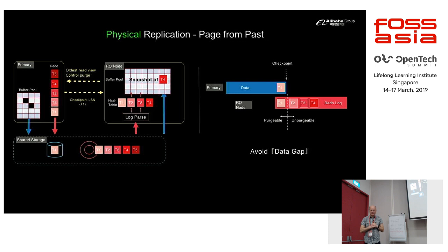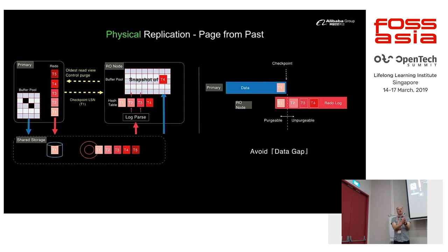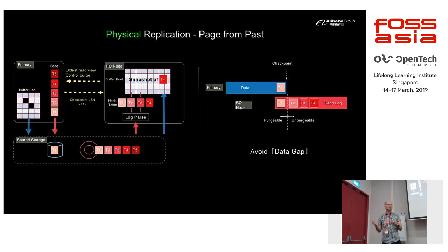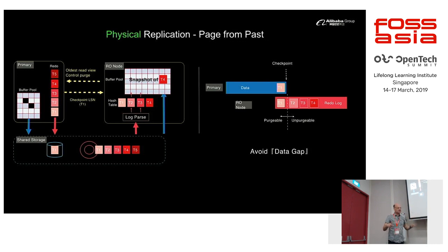InnoDB uses multiversion concurrency control, so there are cases where you need to read an old version of a page using the undo log. In order to do that on a replica, the master must not purge undo log records that a replica might still need. So all replicas tell the master what is the oldest read view they support, so the master does not delete undo log records newer than that. This communication happens over the network and is made necessary by the shared storage model.